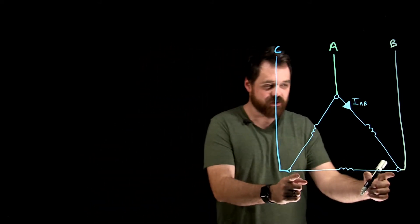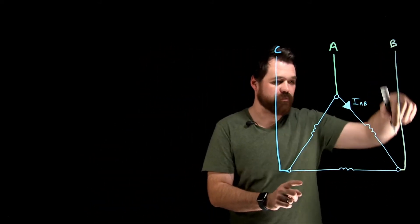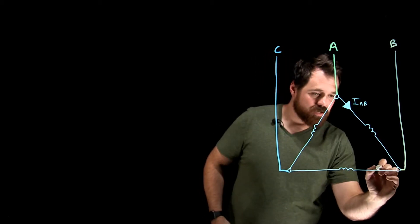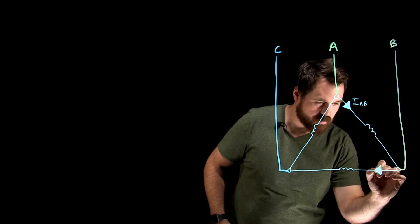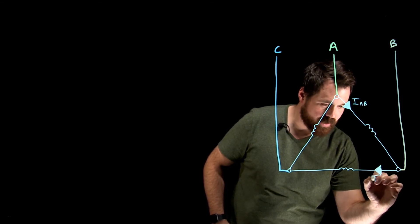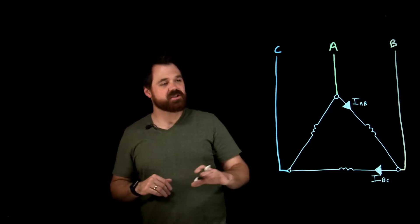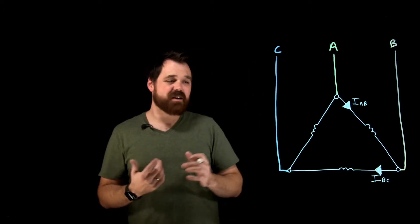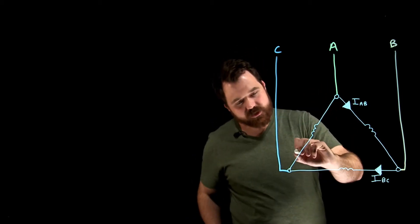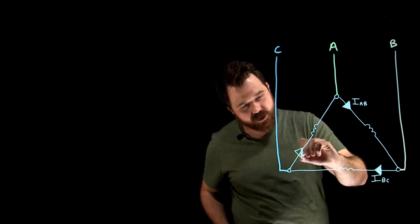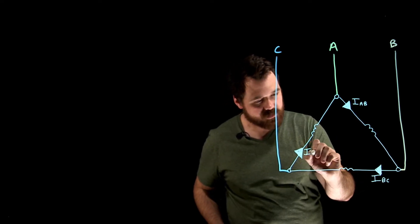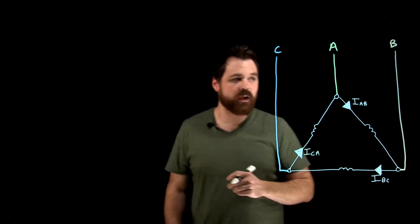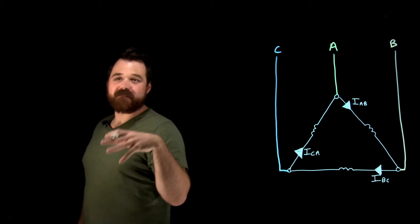Phase current for B would be flowing from B to C, so we call that our phase B current — it's I_BC. Same thing with phase C, which is located between C and A, so my phase C current we would call I_CA. So those are my phase currents.